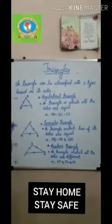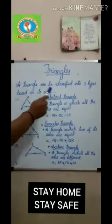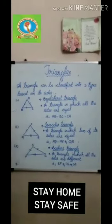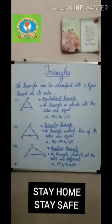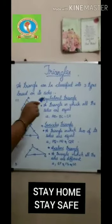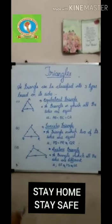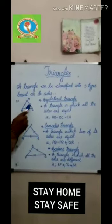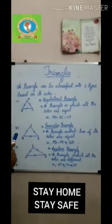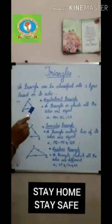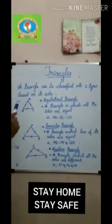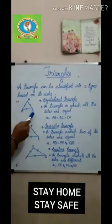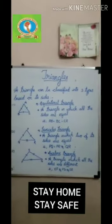Now, a triangle can be classified into three types based on its sides. First, it is the equilateral triangle. A triangle in which all three sides are equal is called an equilateral triangle. Here, AB is equal to BC is equal to CA.